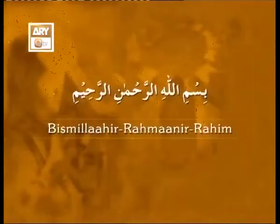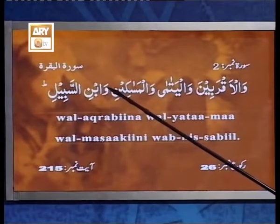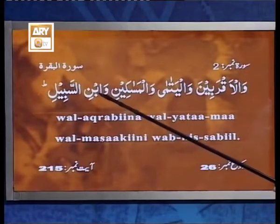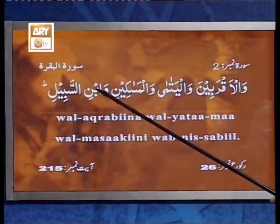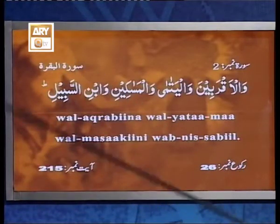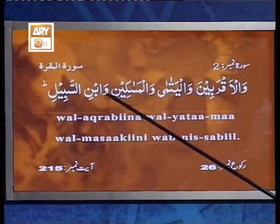ساتویں کالر: سرگودہا سے تلت بات کر رہی ہیں۔ انہوں نے پڑھا: اعوذ باللہ من الشیطان الرجیم، بسم اللہ الرحمن الرحیم — والأقربین، والیتامٰی، والمساکین، وابن السبیل۔ ہوسٹ: وابن میں آپ نے با پر قلقلہ نہیں کیا — یوں پڑھیں: وَابْنِ۔ با پر تھوڑی سی جنبش دیں۔ کالر نے ریپیٹ کیا۔